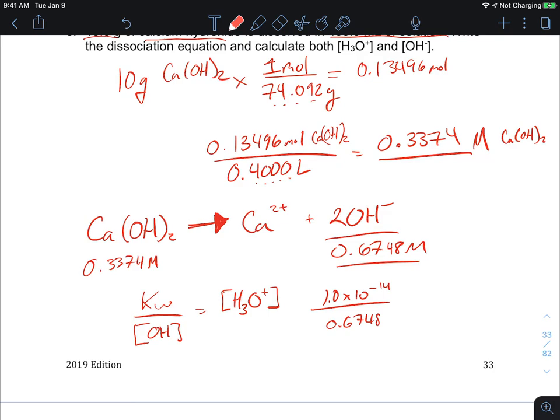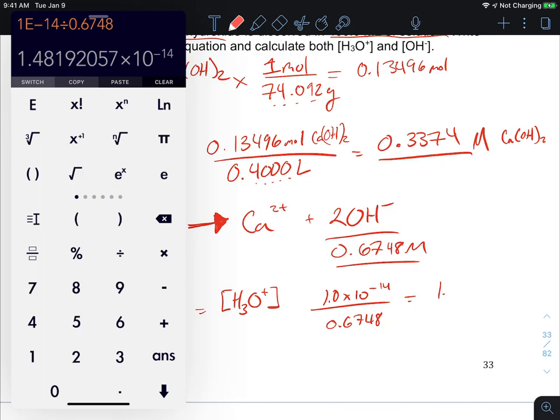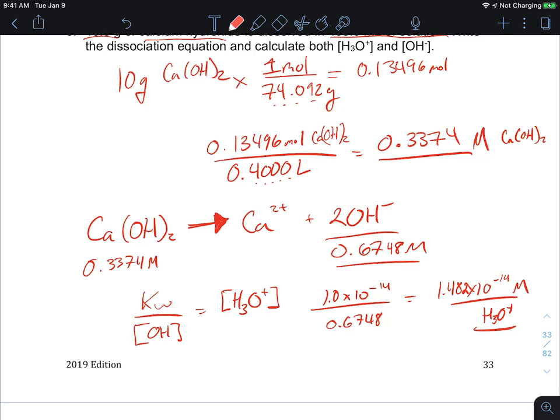That's going to give us a value, 1e negative 14 divided by 0.6748, and so we get a very small number: 1.48, we do still get to keep all of our significant figures, so 1.482 times 10 to the negative 14, and that would be our moles of H3O plus. So a very low pH indeed, or a very high pH. This would be about a pH of 14-ish.